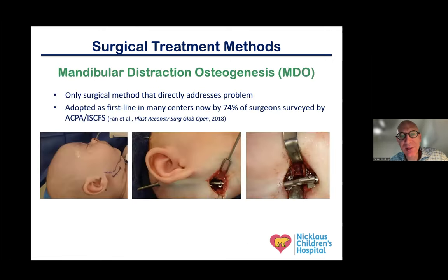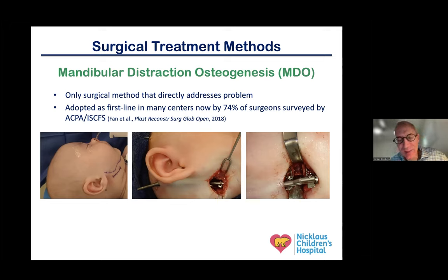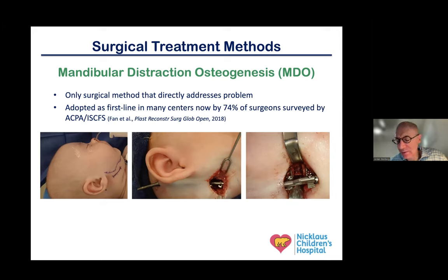Mandibular distraction has become the first-line surgical method in many centers — it is the only surgical method that directly addresses the small jaw. A survey through the ACPA and International Craniofacial Society found that in three quarters of centers, it is now the preferred first-line surgical treatment. Some places do distraction with an internal device, others use an external device with pins through the skin into the mandible. Even with internal devices, there are different configurations — turning pins can exit by the chin region or behind the ear.